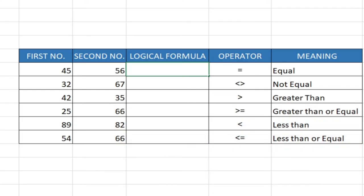Welcome to IoT. Today I want to talk about logical tests in Excel. Basically, what it means is having a logical output which is either true or false. We have a first number and a second number, and we have the logical formula which we're going to display.